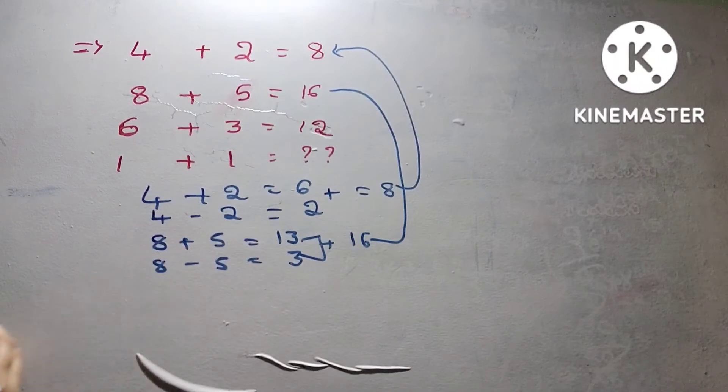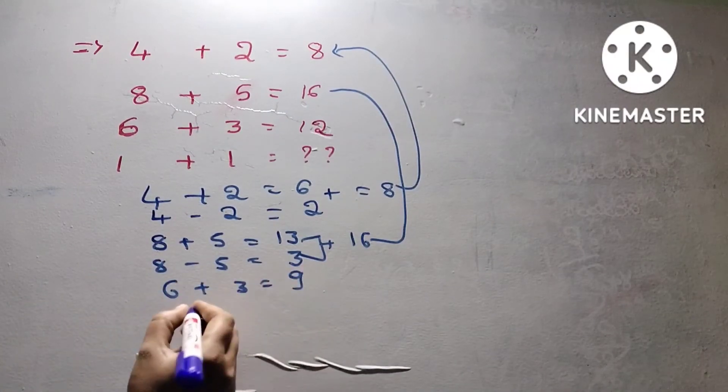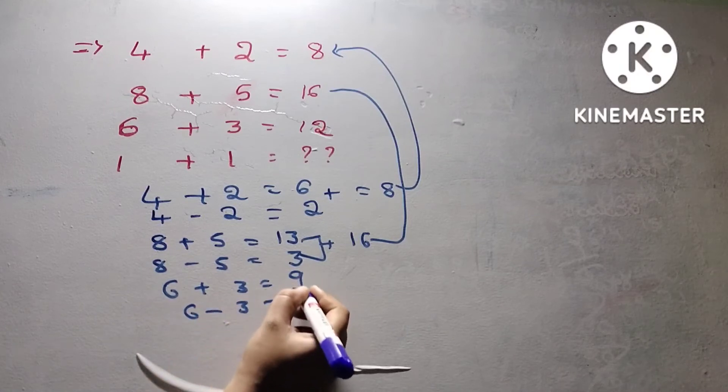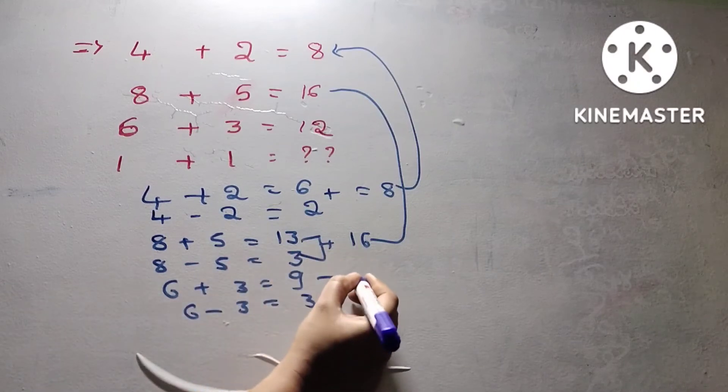On the left, friends, again 6 plus 3, 9. 6 minus 3, the difference is 3. 9 plus 3, 12.